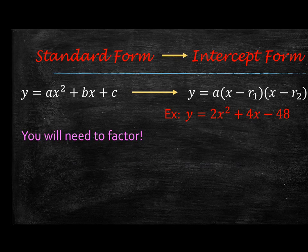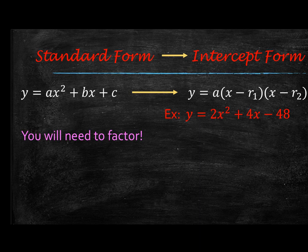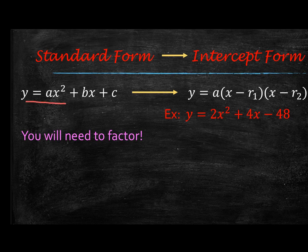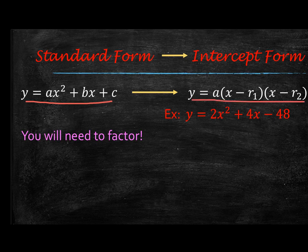Let's first look at converting from standard form to intercept form. Recognize that standard form is when it is in the format y equals ax squared plus bx plus c, and then intercept form will look like this. So we have this first example, y equals 2x squared plus 4x minus 48, and when you're going from standard to intercept form, you will always need to factor.